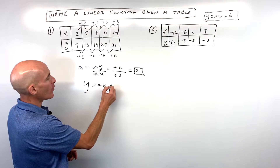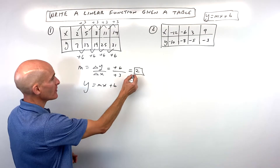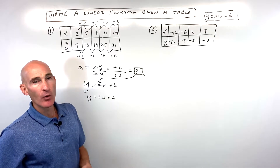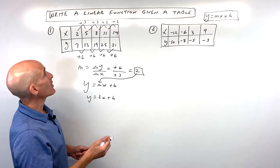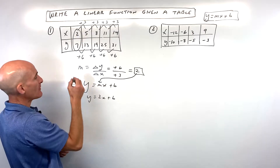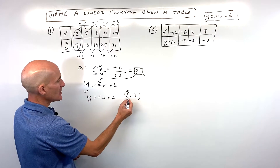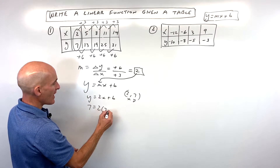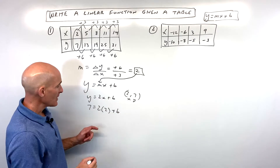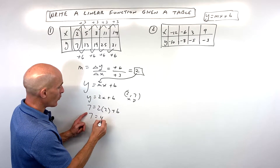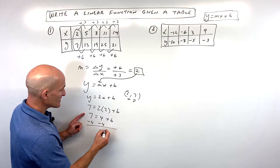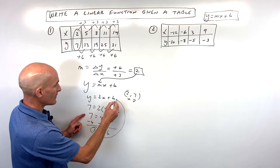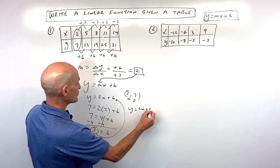In our slope-intercept form — y equals mx plus b — let's go ahead and put two in for m. But how do we figure out what that b value is? What you can do is pick one of the points. Say, for example, the point two comma seven. We're going to put seven in for y and two in for x, and now we can solve for b. Two times two is four. Subtract four from both sides, and you can see that b is equal to three. So we put three back in for b, and we've got our equation: y equals two x plus three.